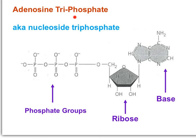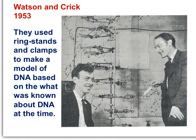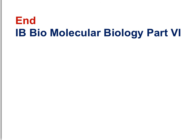ATP is a very important energy molecule in the cell, and ATP is composed of ribose. Watson and Crick used evidence gathered by others to develop their model of DNA structure. Their model, using ring stands and clamps, was the first accurate description of DNA structure based on what was known at the time. That brings us to the end of IB Bio Molecular Biology Part 6.